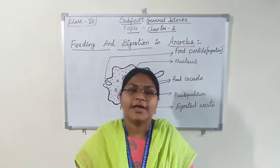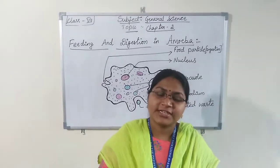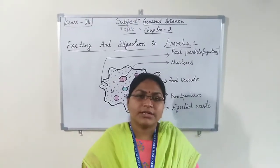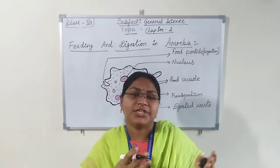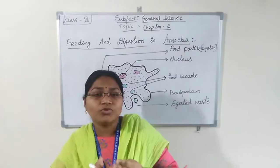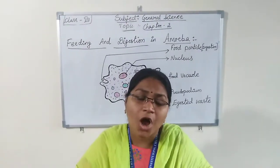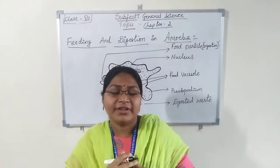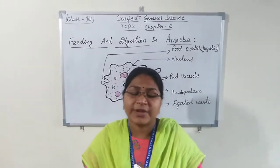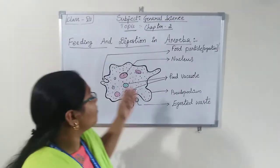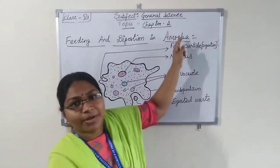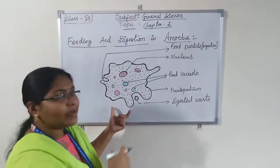Hello students. Last class I explained about digestion in grass-eating animals. We also learned digestion in humans and animals. But some organisms which do not have a mouth and stomach — how will they feed, how will they obtain food, and how will they digest? Today our topic, and the last topic in this chapter, is feeding and digestion in amoeba.